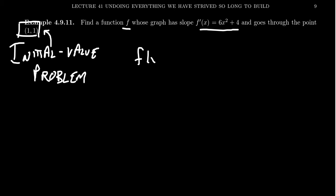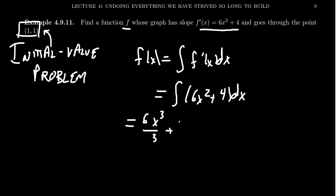For this initial value problem, to find f(x), we first are going to calculate the antiderivative of the derivative f'(x). We know what f'(x) is—it's 6x² + 4. Using the antiderivative power rule and other properties we've seen, the antiderivative will look like x³—excuse me, the power goes up, divide by 3—so 6x³/3 + 4x + a constant. Don't forget that constant there.